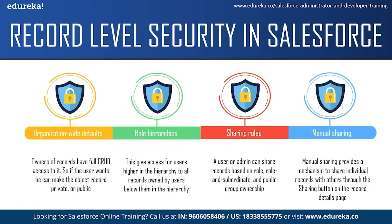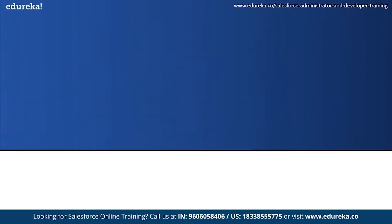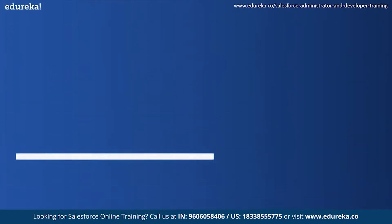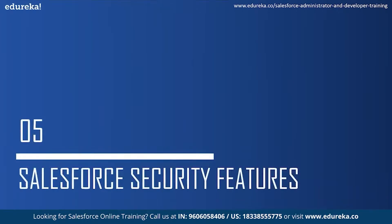The fourth way of managing record level access is manual sharing, which provides a mechanism to share individual records with others. This is accessed through the Sharing button on the record detail page, letting end users share individual records with each other. That covers the different levels of security in Salesforce. Now let's move on to some of the prominent Salesforce security features.